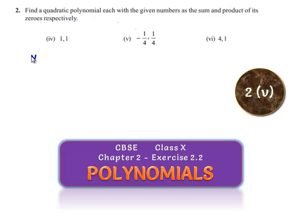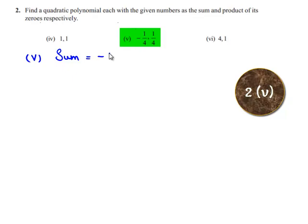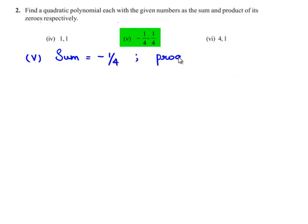Coming to the fifth bit, the given sum of the zeros is equal to minus 1 by 4 and the product of the zeros is equal to 1 by 4.